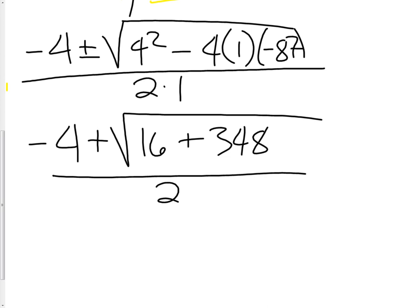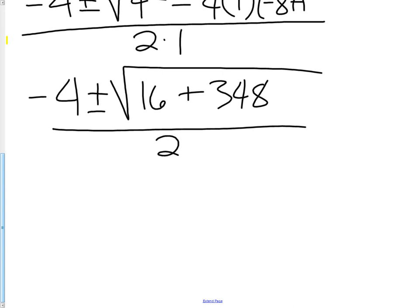So we have negative 4 plus or minus 4 squared, which would be 16. And then we have negative 4 times 1 times negative 87, which is 348. Again, we just need to keep on simplifying this. So we have negative 4 plus or minus 16 plus 348.